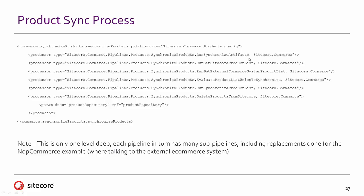At a high level, we're synchronizing artifacts and lookups that are necessary, looking at the list of products in Sitecore, looking at the list of products in the external system, and running them through comparing. This is just one level deep. Then we're going to drill down and see how Commerce Connect initiates those pipelines, and more importantly how the custom code for the NopCommerce plugin on the Sitecore side inserts itself into those pipelines and calls the code necessary to do that work of synchronization.